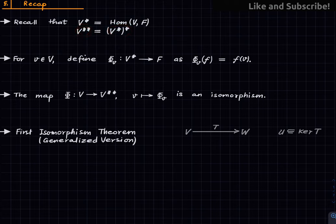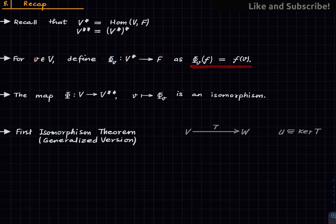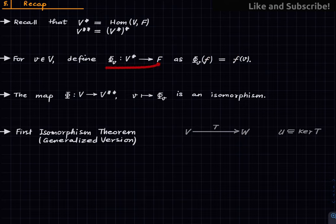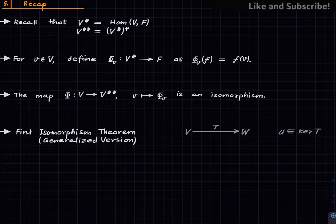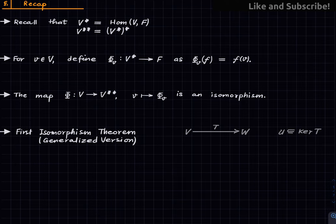For any vector v we have a map from the dual to the base field, which is basically the evaluation map. You pick an element of the dual and evaluate it on the vector v, and this is a linear map. This resides in the double dual, and what we showed was that these are precisely the elements of the double dual, because this map which takes little v to that element is first of all a linear map and an isomorphism. So everything in the double dual looks like that for some vector v, and further this isomorphism is what we call the natural isomorphism between the vector space V and its double dual.